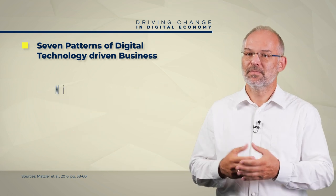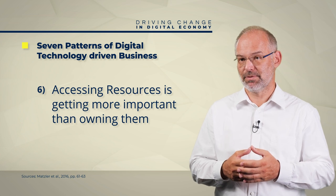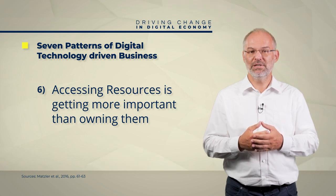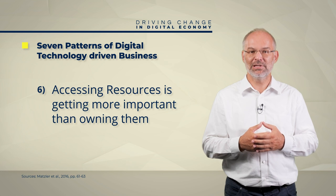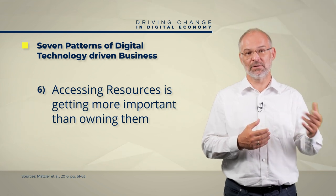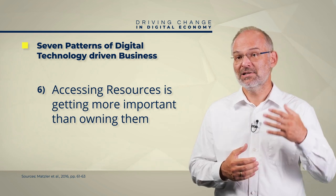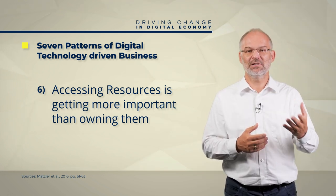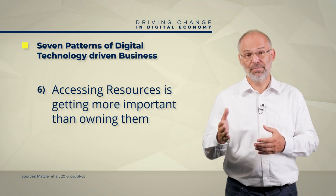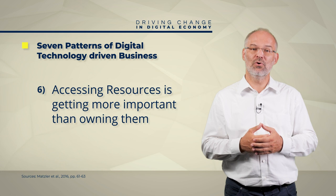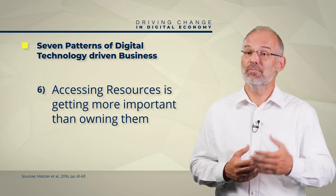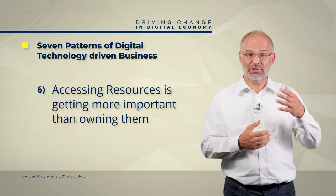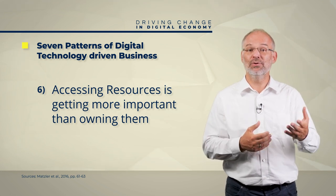Number six, access to resources becomes more important than ownership. In a world of increasing digitization and networking, we can observe more and more companies that are successful without possessing strategically important resources or capabilities themselves. What they have mastered, however, is access to these resources and capabilities. This is somewhat at odds with what classical strategy literature teaches — that companies should build and leverage unique core competencies as the source of competitive advantage. Examples of companies that control access to resources include Uber, the largest cab company in the world without its own cab.